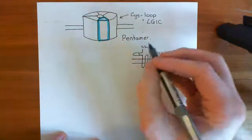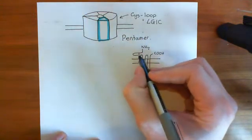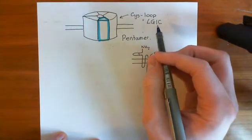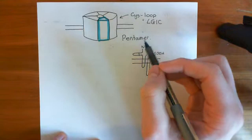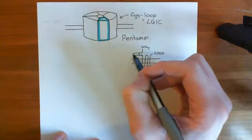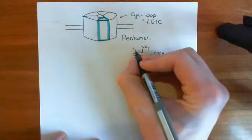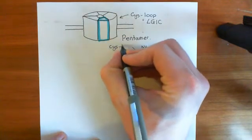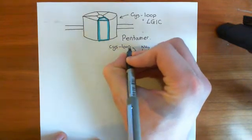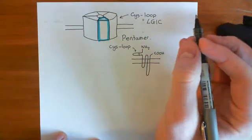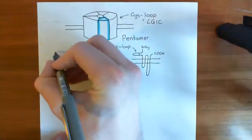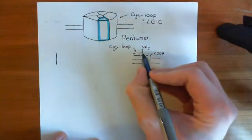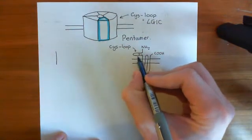Let me give you some insight into why they are known as cis-loop ligand-gated ion channels, and then I'll give you some examples. It's this cis-loop here that causes them to be called cis-loop ligand-gated ion channels. This is a blown-up version of this cis-loop — we're taking this bit of the polypeptide here.